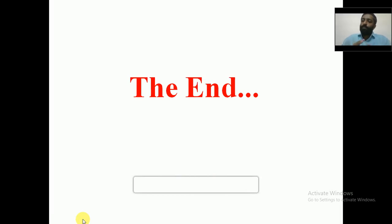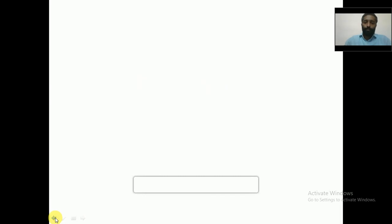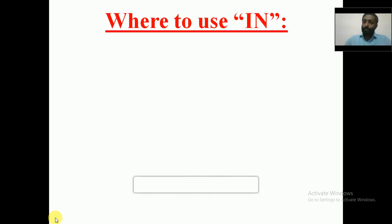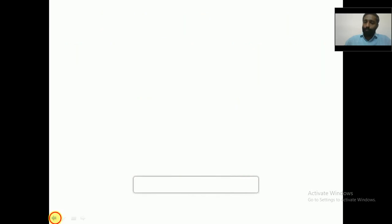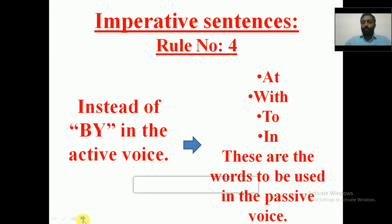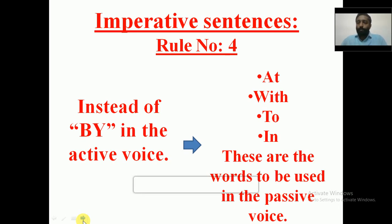So this is Rule number 4, and that is very important. As I have told you, 'by' is one of the basic four changes of active and passive voice. But instead of 'by', there are four other words that can be used: at, with, to, and in. Remember where to use these four words — after what type of expression. I hope you have understood. This is the end of imperative sentences, and with that we are winding up the topic of active and passive voice. Once the topic is over, I will give some exercises so you can check whether you have understood the rules.